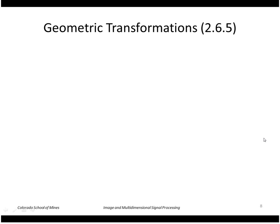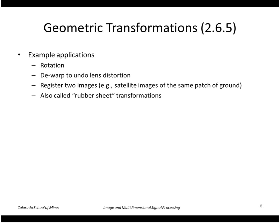Let's look at geometric transformations. We've already seen simple scaling, but let's look at more general kinds of transformations. For example, we might want to rotate an image or apply some sort of warping or unwarping to undo lens distortion. A practical application would be to register two images, such as satellite images of the same patch of ground. These are sometimes called rubber sheet transforms.